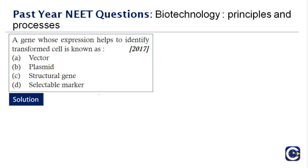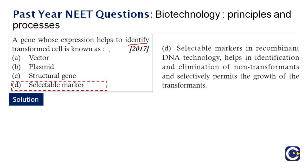The answer is selectable marker. Selectable markers in recombinant DNA technology help in the identification and elimination of non-transformants and selectively permit the growth of transformants. A selectable marker is a gene introduced into a cell — especially a bacterium or cells in culture — that confers a trait suitable for artificial selection. The correct answer is option D.